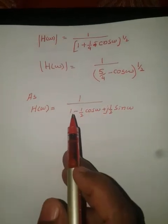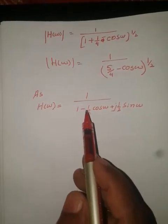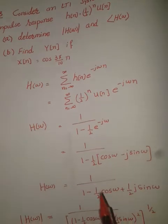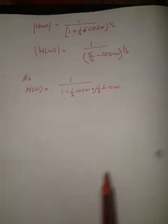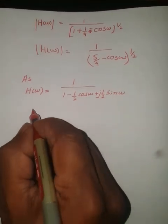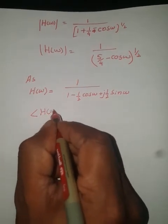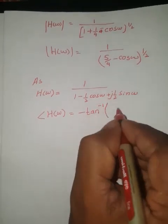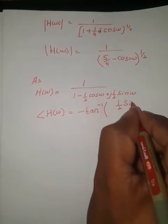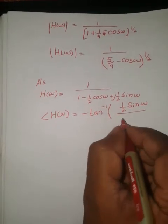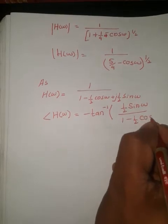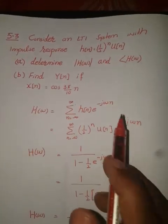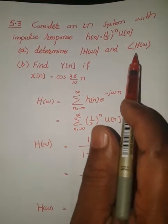The frequency response is H(Ω) = 1 / (1 - (1/2)cos Ω + j(1/2)sin Ω). The phase of H(Ω) is equal to minus tangent inverse of [(1/2)sin Ω] / [1 - (1/2)cos Ω]. So this completes part A — we have found |H(Ω)| and the phase of H(Ω).